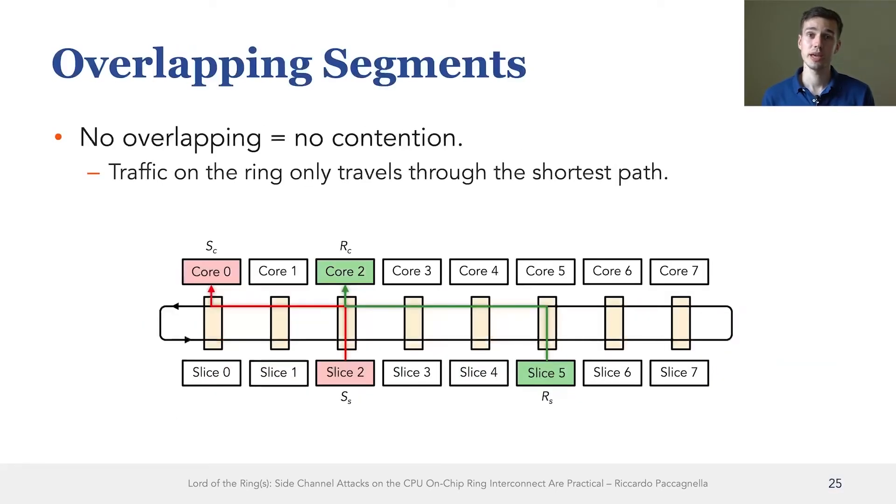The next observation that we made is that when the sender and the receiver issue traffic that travels over non-overlapping segments of the ring interconnect, then there is never contention. And the reason why this is the case is that traffic on the ring interconnect only travels through the shortest path. So if the sender and the receiver use different paths, they do not affect each other.